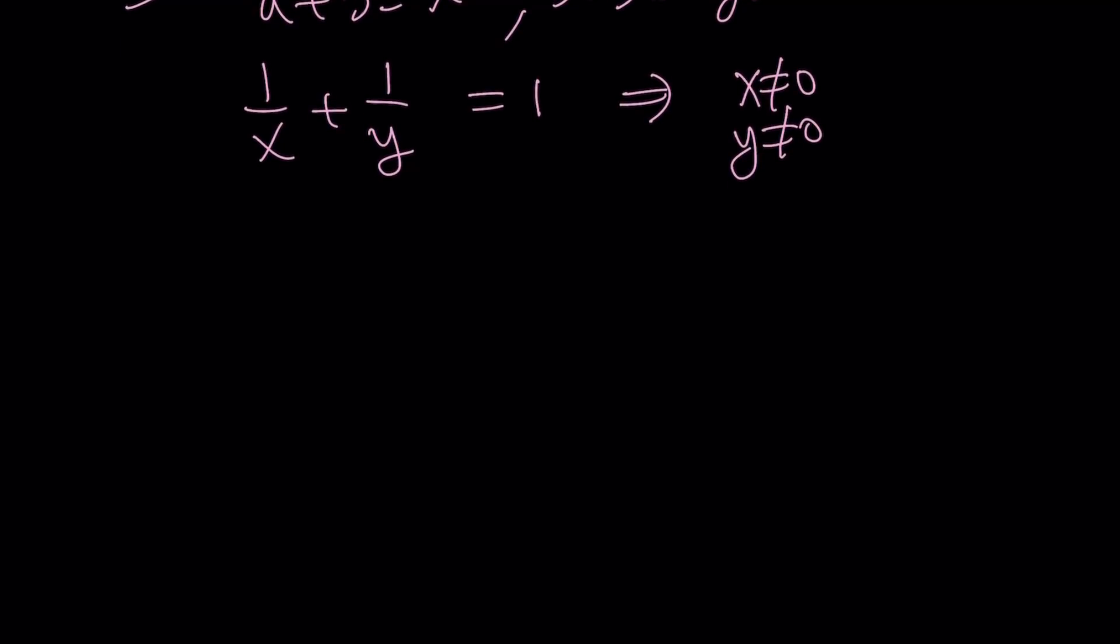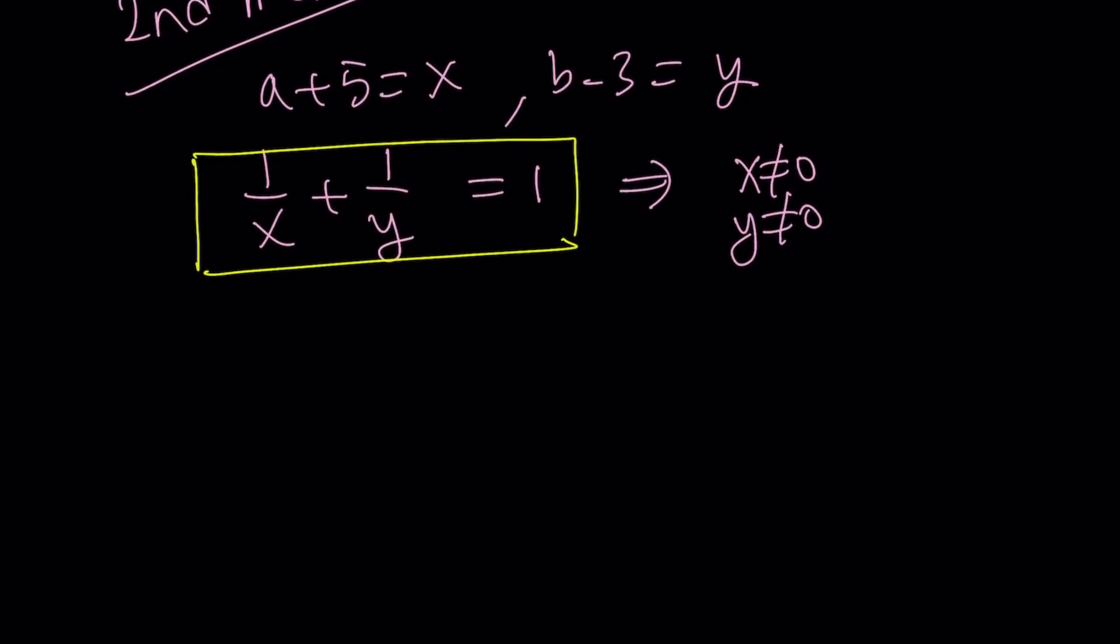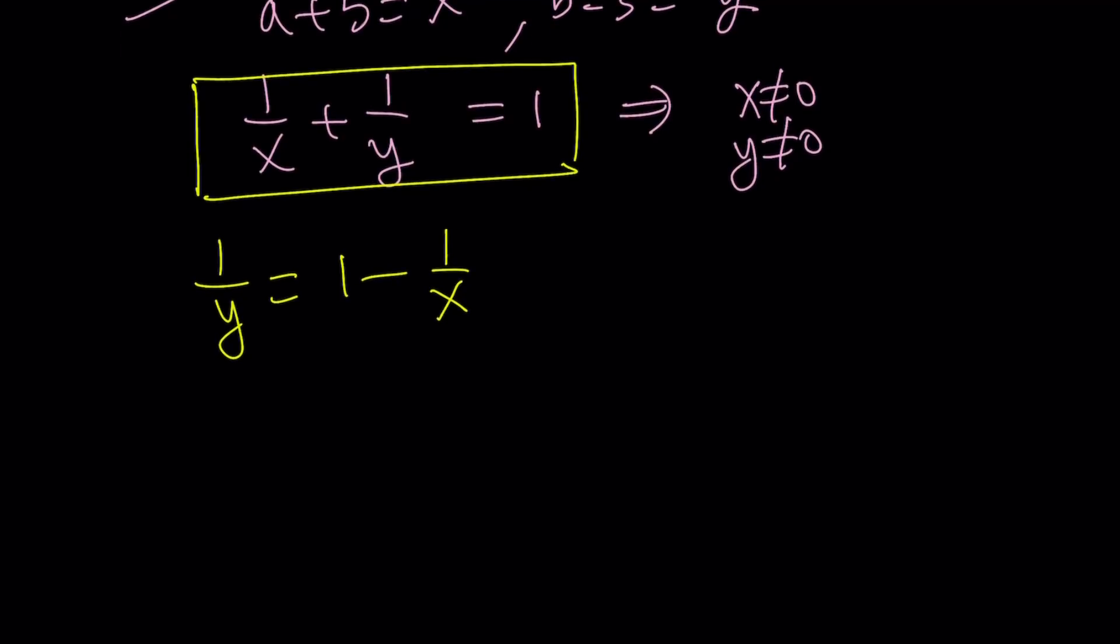Since we have this equation right here, we can go ahead and isolate one of the variables. That's why I told you this solution method is slightly different from the first one. So I would like to isolate 1 over y. And it doesn't matter because we have this symmetry. At least x and y are symmetrical. So let's go ahead and make a common denominator and then flip both sides. And this gives us y equals x over x minus 1.